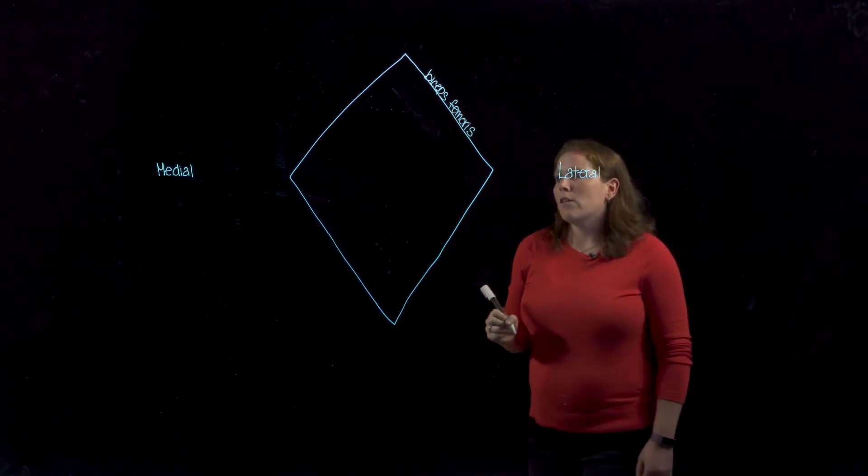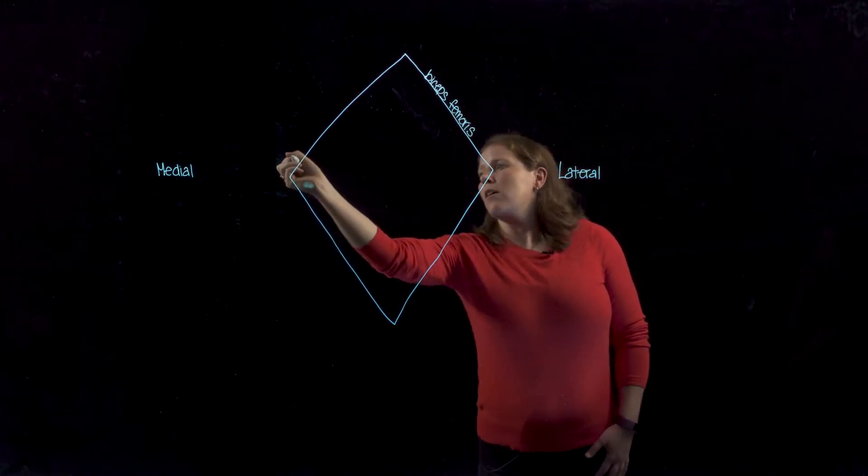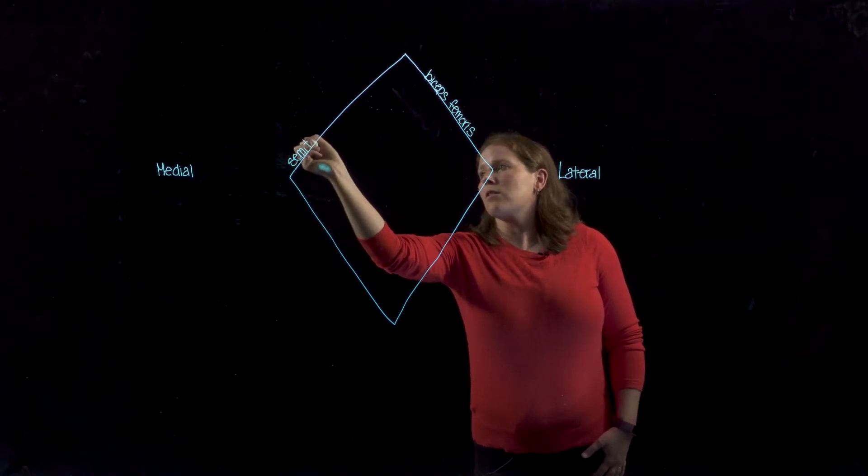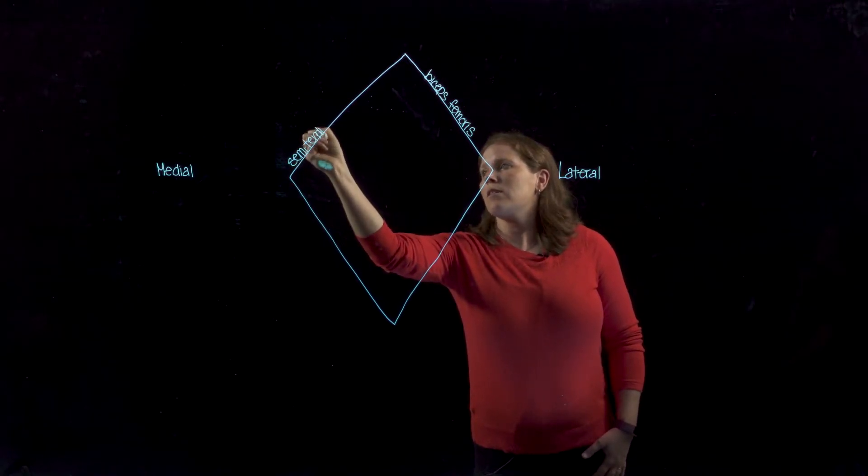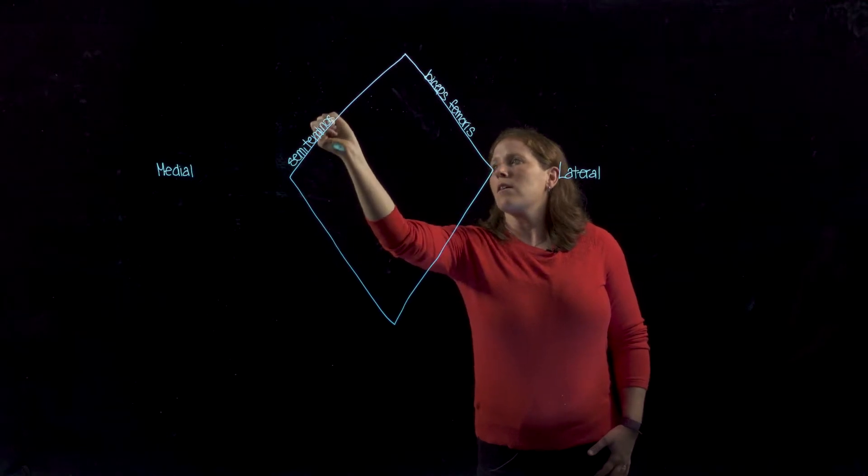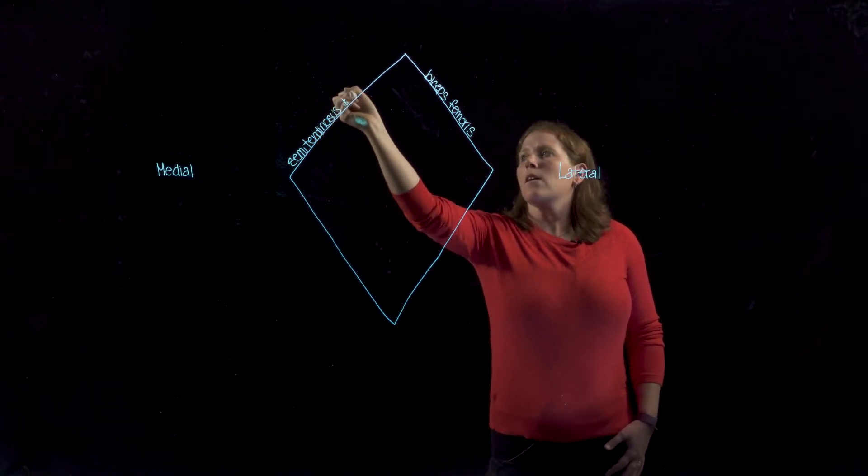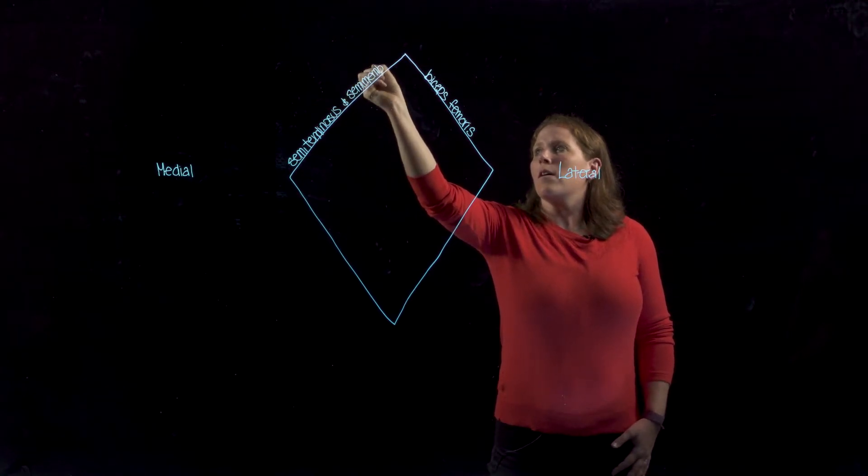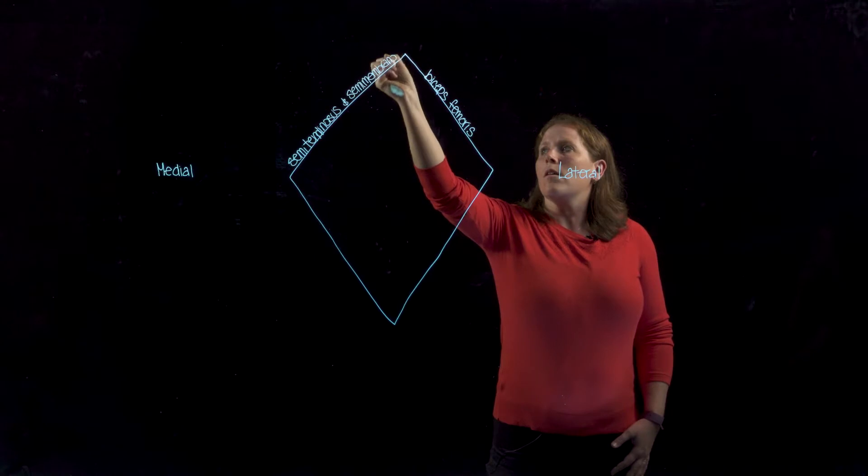And on the medial side you'll have the two semi muscles: semitendinosus and semimembranosus.